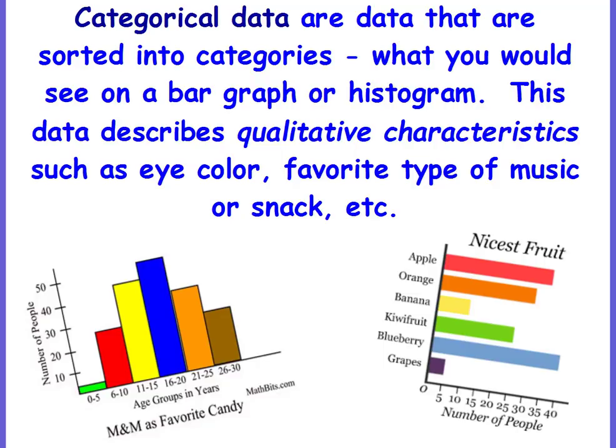Categorical data are data that are sorted into categories, what you would see on a bar graph or histogram. This data describes qualitative characteristics such as eye color, favorite type of music or snack.